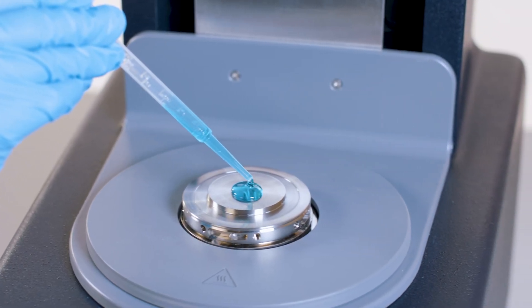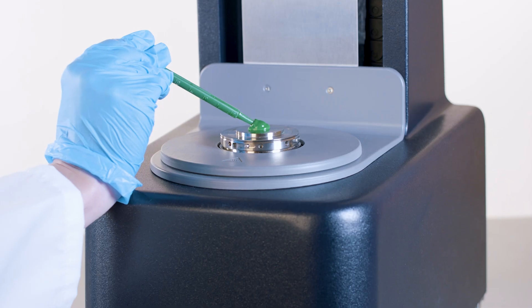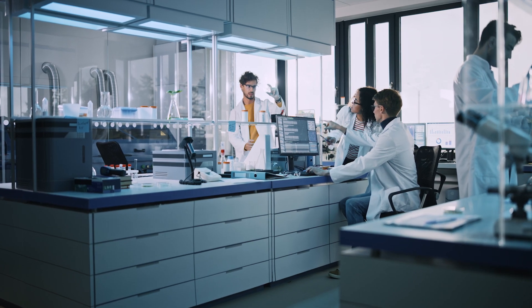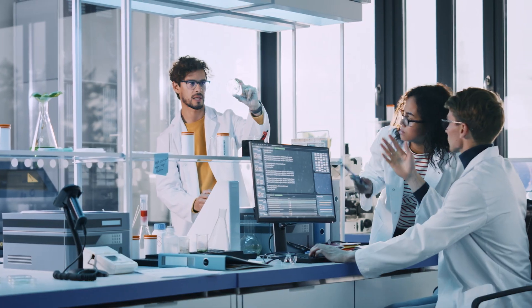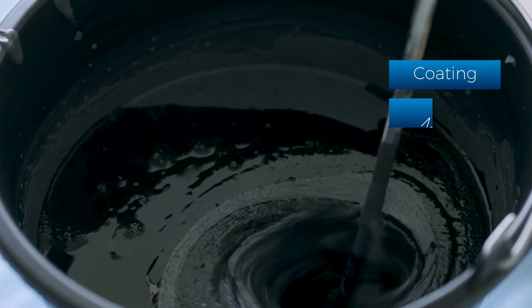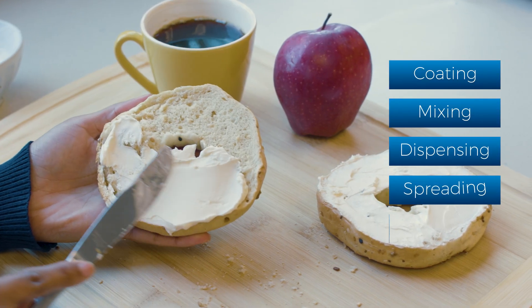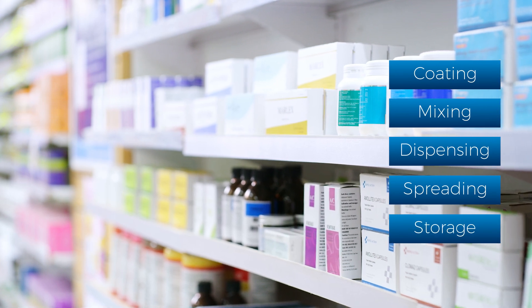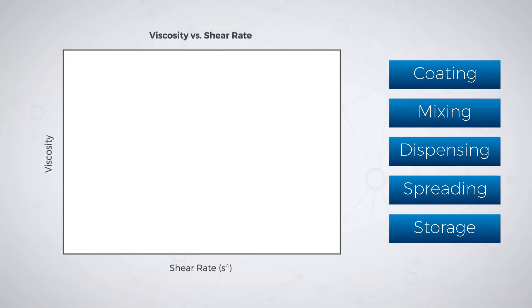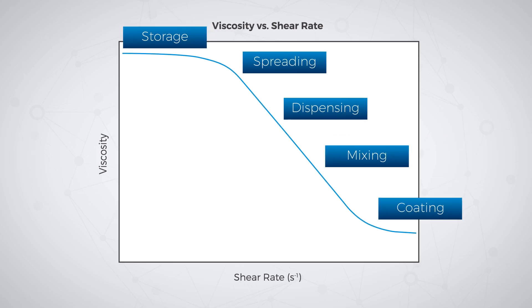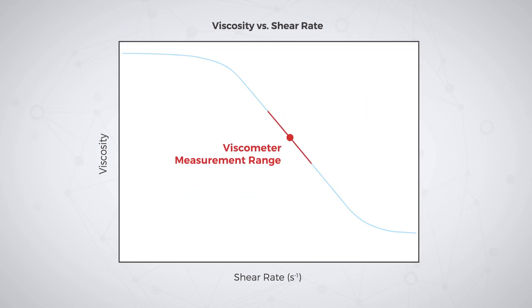Is your viscosity testing getting to the core of your material behaviors? Labs across all markets need to predict, optimize, and control material behavior during processes like coating, mixing, dispensing, spreading, and storage. These processes require a level of performance higher than traditional viscometers, which only measure viscosity in a narrow range.